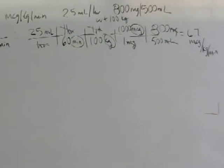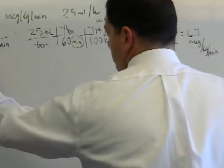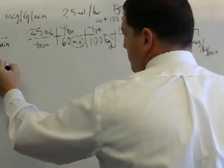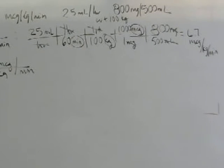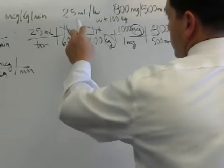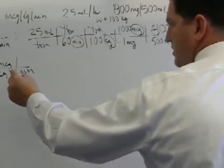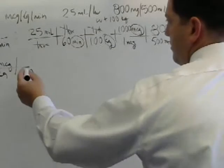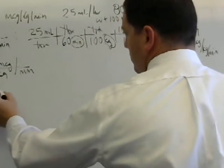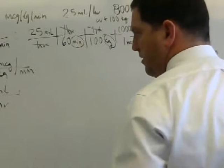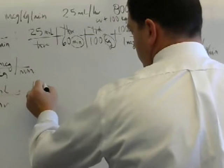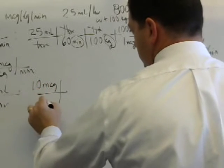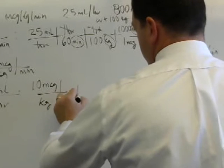Well, let's say the provider comes by and says, I would like to change this order, and we would like now to give this patient a set dose of 10 micrograms per kilogram per minute. Well, now that's going to change my rate. Because they want to give a set dose. So I need to know how much do I plug that in on the pump. And on the pump, we deal with mls per hour. So, first thing I do is I bring down. I say, I want 10 micrograms per kilogram per minute.